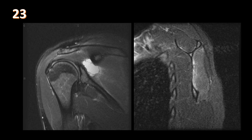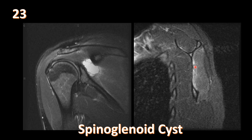Coronal oblique and sagittal oblique T2 fat-suppressed MRI images of the shoulder show a large paralabral cyst insinuating into the suprascapular nerve tunnel. There is edema of the infraspinatus only — the suprascapular nerve innervates both the supraspinatus and infraspinatus. A mass at the suprascapular notch would cause edema of both muscles; at the spinoglenoid notch, only the infraspinatus is affected, as in this case. Other causes of shoulder denervation include axillary nerve compression in the quadrilateral space and brachial neuritis (Parsonage-Turner syndrome).